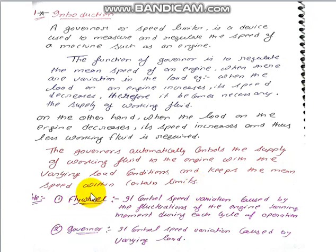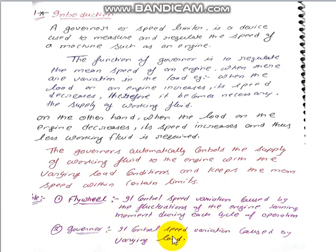Two important points distinguish the flywheel and the governor. The flywheel controls speed variation caused by the fluctuation of the engine turning moment during each cycle of operation. The governor, on the other hand, controls speed variation caused by varying load. In the flywheel's case, fluctuation of engine turning moment causes the speed variation — that is the main difference.